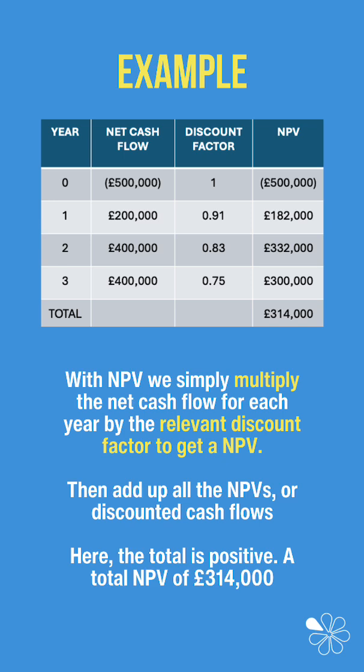The table shows the net cash flows of an example investment. With NPV, all we do is multiply each net cash flow by the relevant discount factor to get an NPV. For example, a 200,000 inflow in year one multiplied by 0.91 gives us a future value of 182,000. Then we just add up all the NPVs or discounted cash flows, and here the total is positive — a total NPV of 314,000.